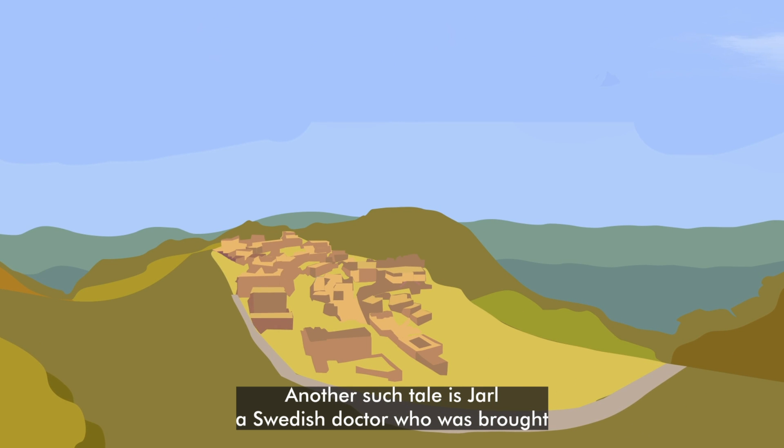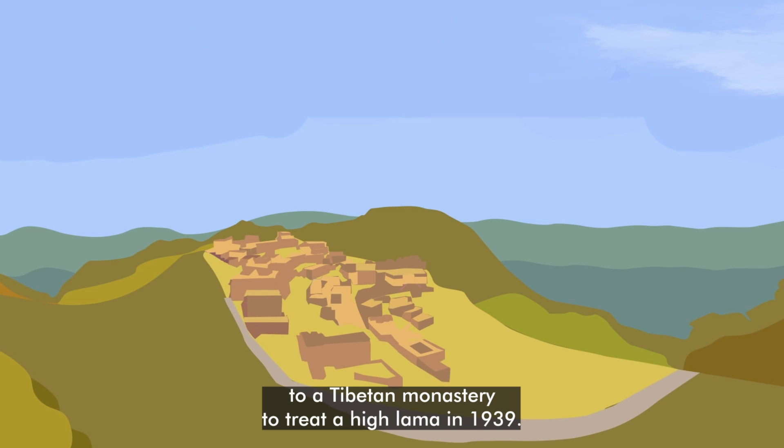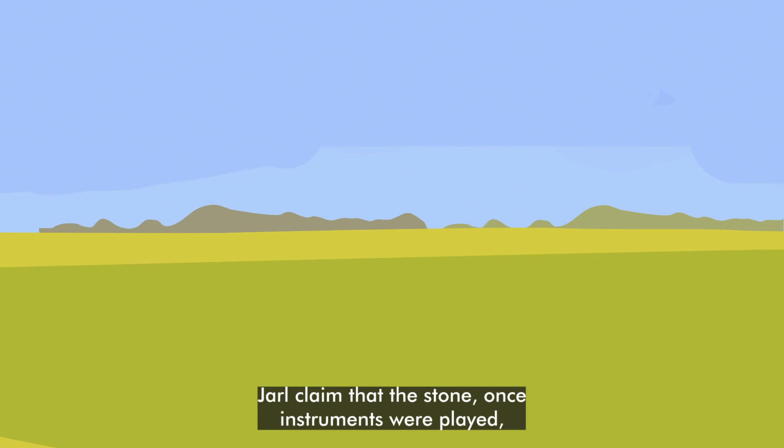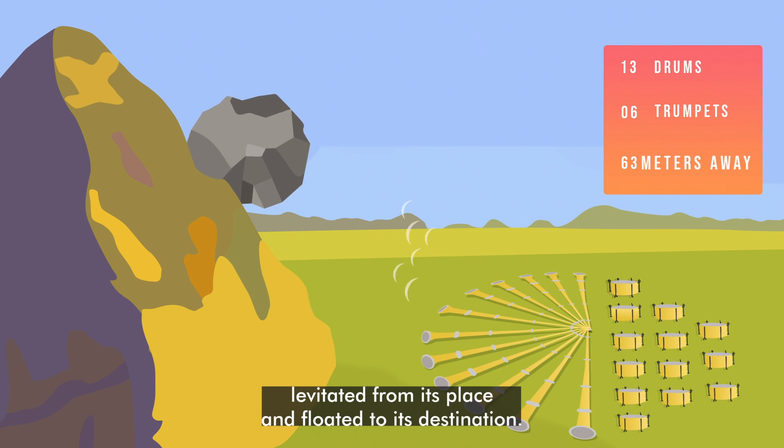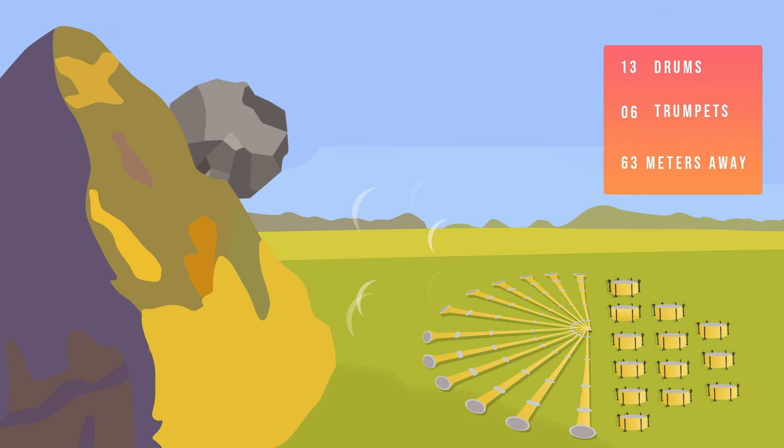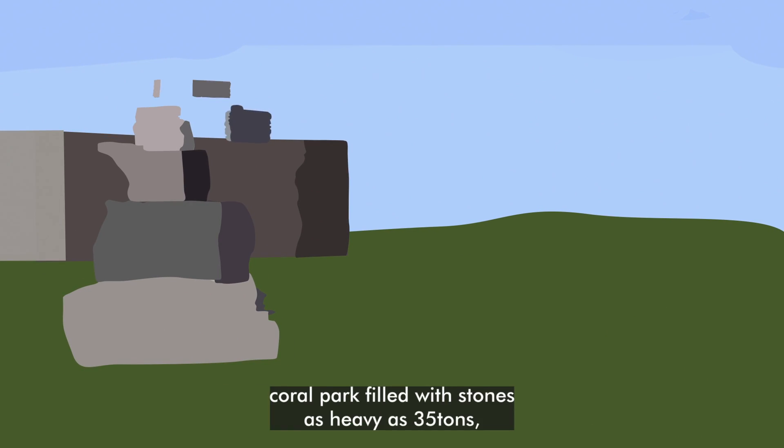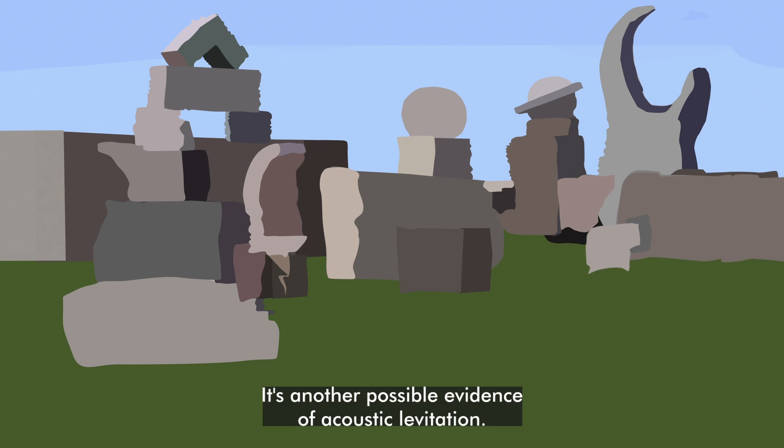Another such tale is of Jarl, a Swedish doctor who was brought to a Tibetan monastery to treat a high lama in 1939. Jarl claimed that the stone, once the instruments were played, levitated from its place and floated to its destination. Another story of Edward Leedskalnin, who alone built an entire coral park filled with stones as heavy as 35 tons, is another possible evidence of acoustic levitation.